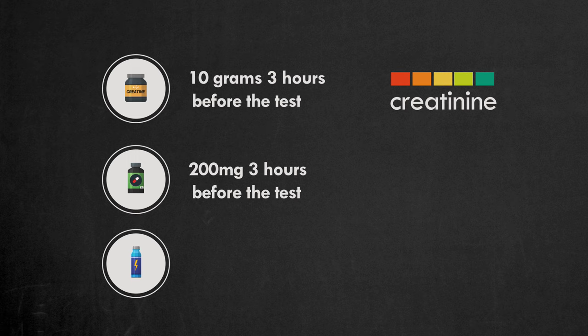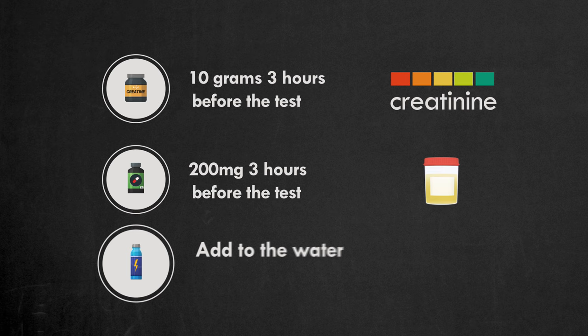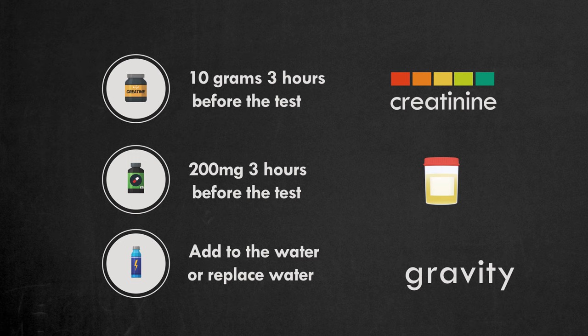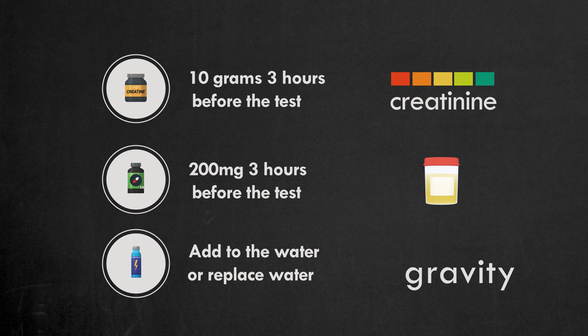Take 200 mg of vitamin B 3 hours before the test. This will restore the color of the urine. Add electrolyte solution to water or replace water with electrolyte solution. This will restore the specific gravity.